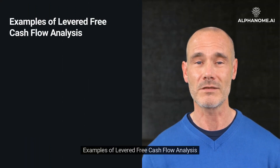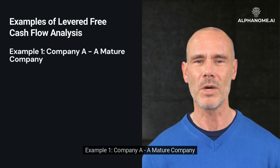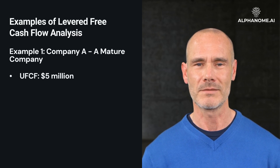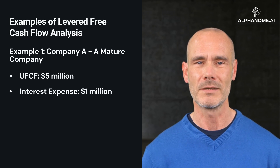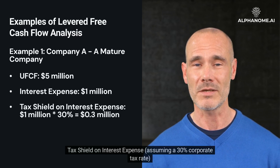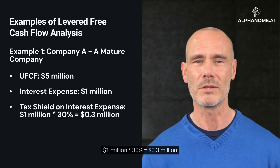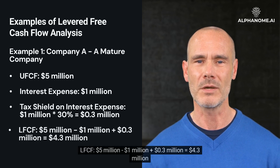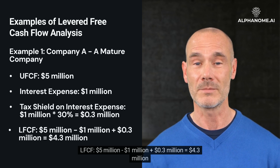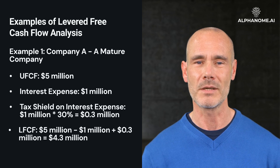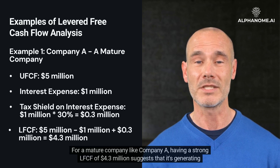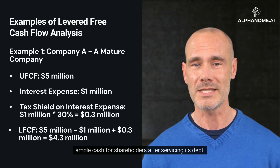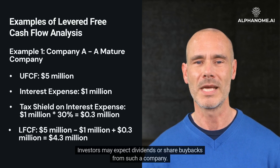Example 1 — Company A, a mature company. UFCF: $5 million. Interest Expense: $1 million. Tax Shield on Interest Expense, assuming a 30% corporate tax rate: $1 million multiplied by 30% equals $0.3 million. LFCF: $5 million minus $1 million plus $0.3 million equals $4.3 million. For a mature company like Company A, having a strong LFCF of $4.3 million suggests that it's generating ample cash for shareholders after servicing its debt. Investors may expect dividends or share buybacks from such a company.